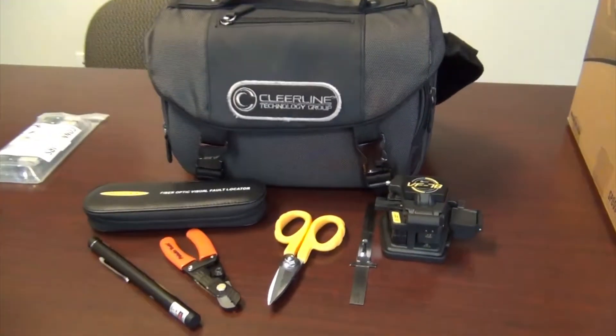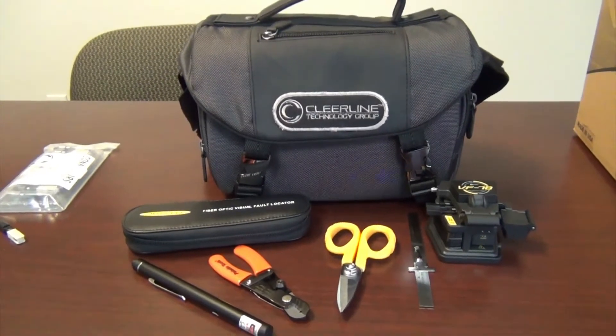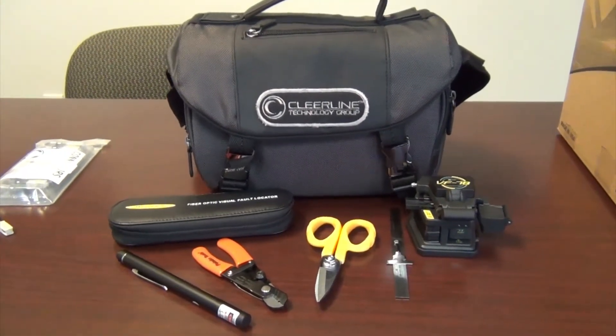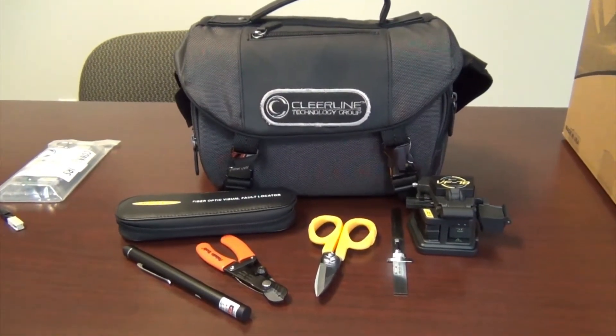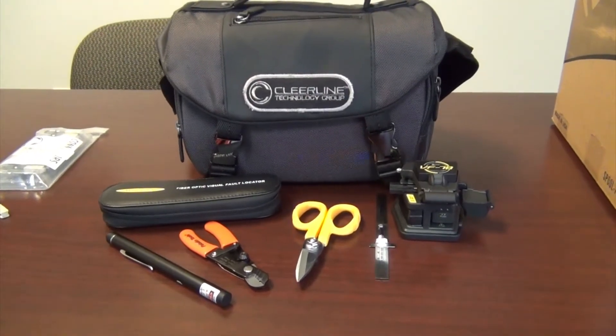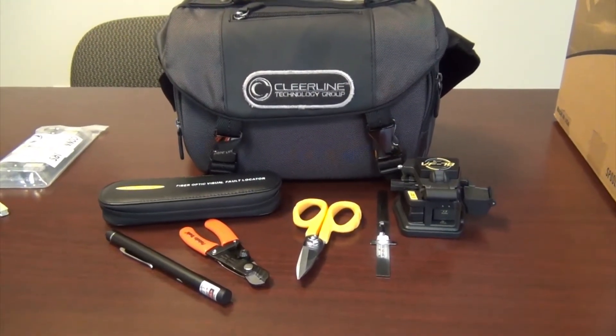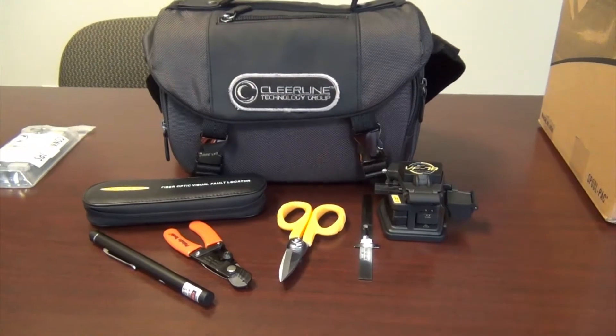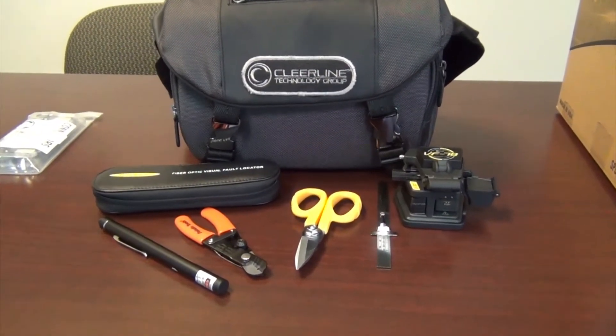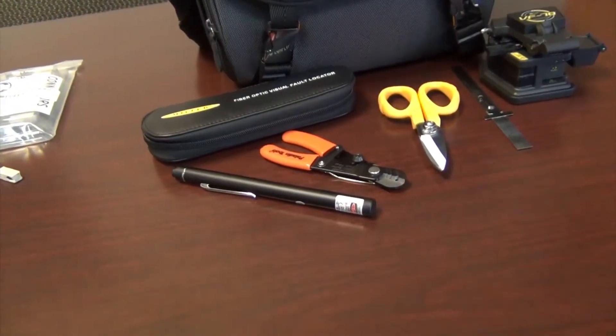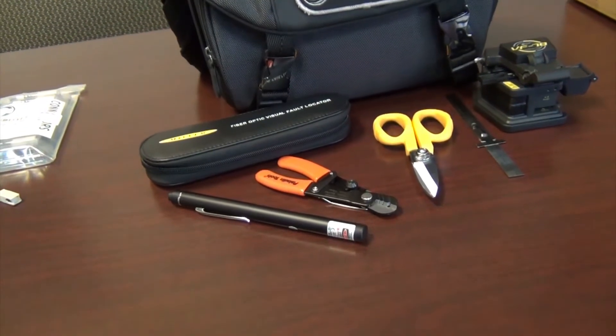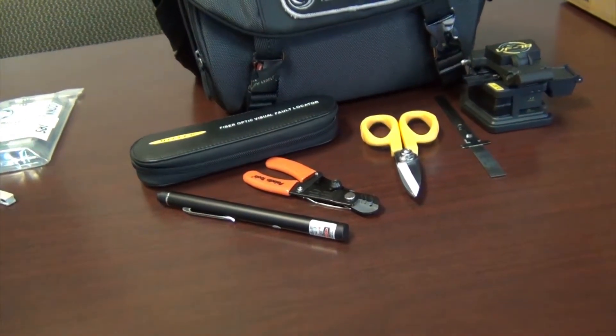The next thing is the clear line termination kit. This is really great because you can buy one kit and it has all the items that you'll need to do a termination out on the job. You'll see on the right there you've got a cutter, a scissors stripper, and of course the tester which is really awesome because it will show you if you have a fault in your fiber line and your connection.